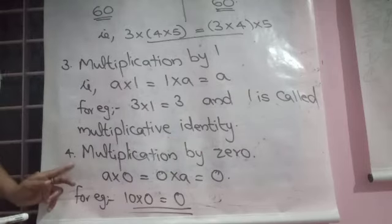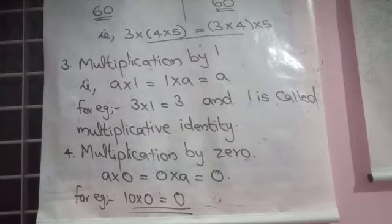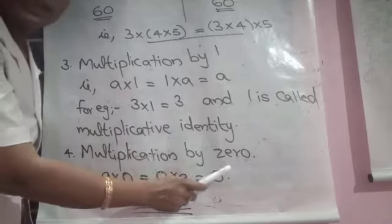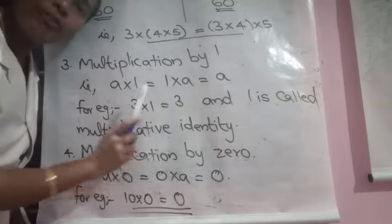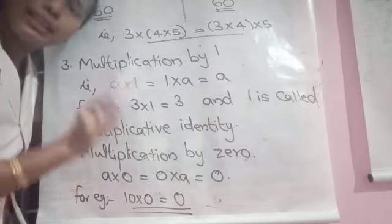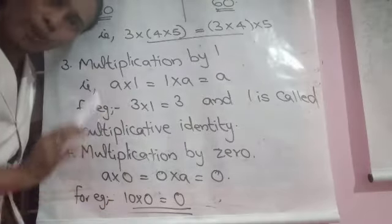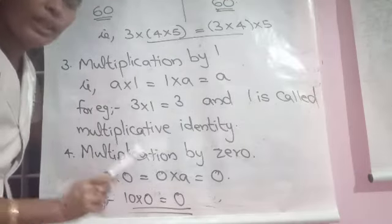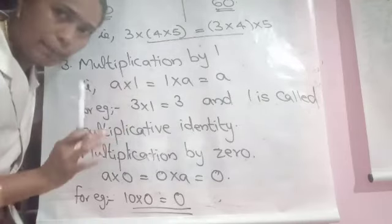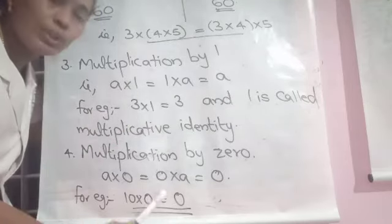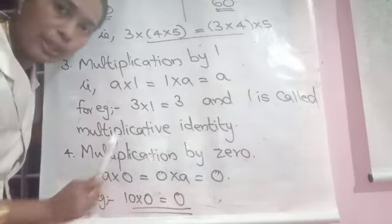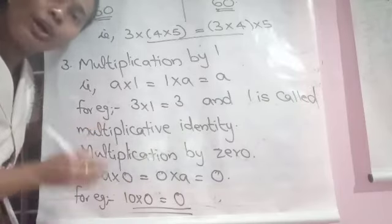Let us move to the fourth property: multiplication by 0. Any number multiplied by 0 is 0 itself. That is called the property of multiplication by 0.